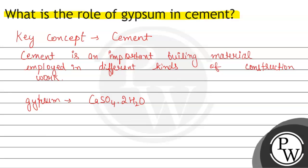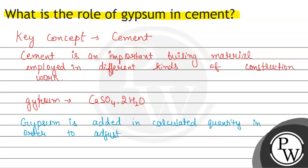Gypsum is added in the cement in a calculated quantity in order to adjust the rate of setting of cement.